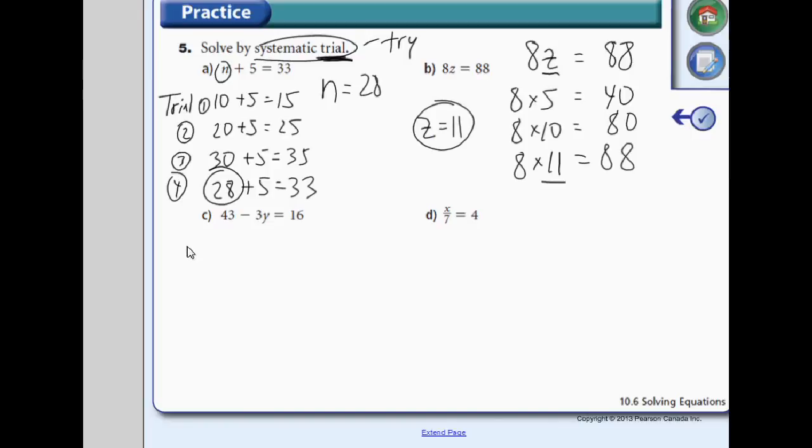Let's look at c. 43 minus 3 times the number is 16. A lot of moving parts here. Well, let's try and simplify things. 43 minus some number is 16.